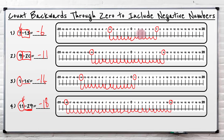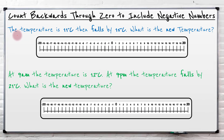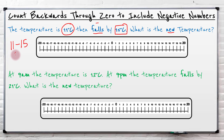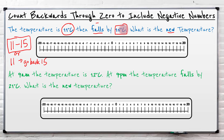So using the number line to go through negatives is really, really helpful and useful. Now let's look at it in relation to a word problem. The temperature is eleven degrees Celsius and then falls by fifteen degrees Celsius — what is the new temperature? Well, if it falls it's getting smaller, it's going down. This means eleven minus fifteen, or start at eleven and then go back fifteen — just exactly the same as what we've been doing.